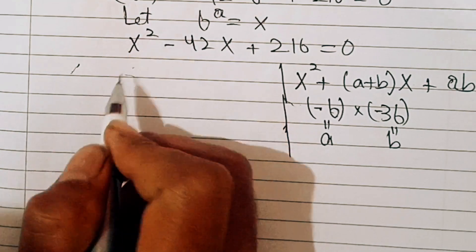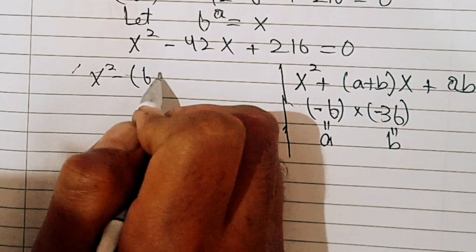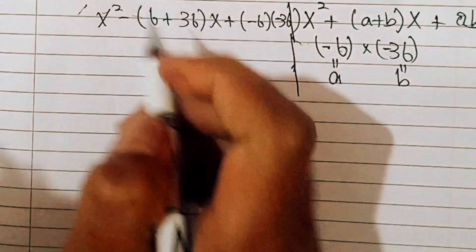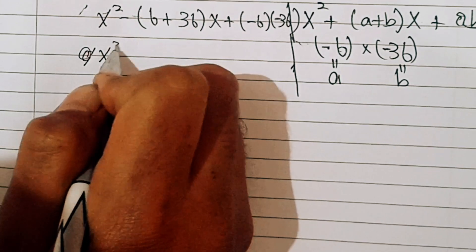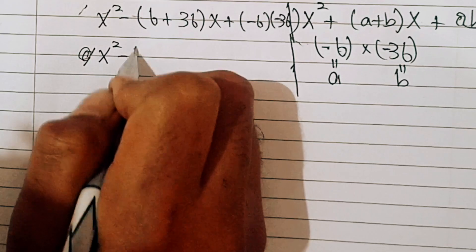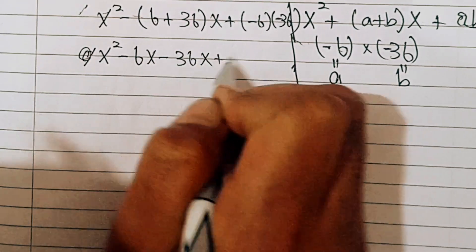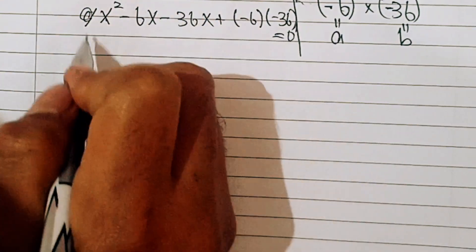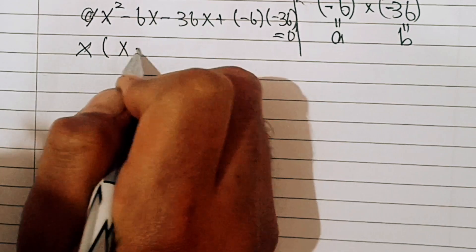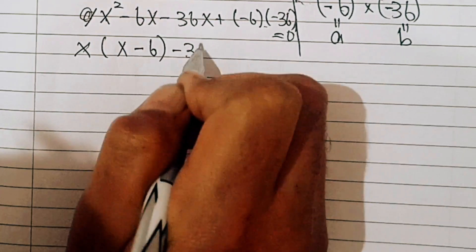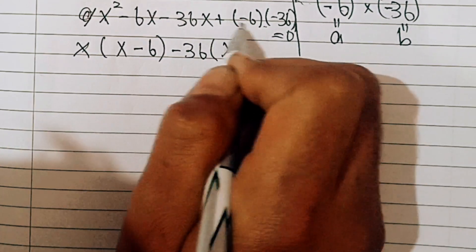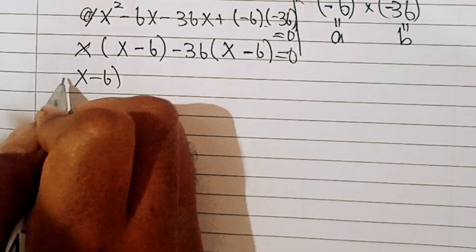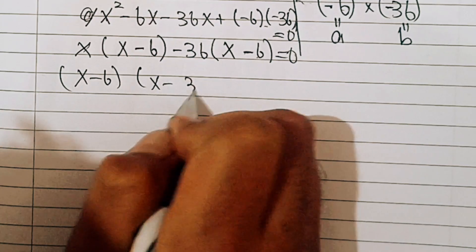So we write x squared minus 42x as x squared minus 6x minus 36x, plus minus 6 times minus 36 equals 0. From the first two terms, take x common to get x times (x minus 6). From the last two terms, take minus 36 common to get minus 36 times (x minus 6). So we have (x minus 6)(x minus 36) equals 0.